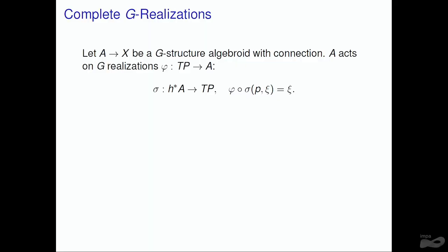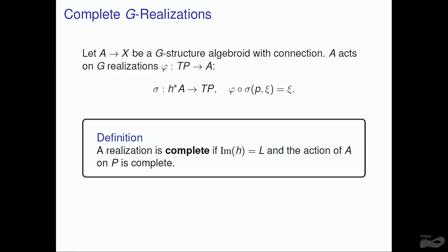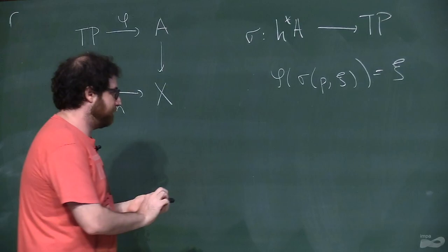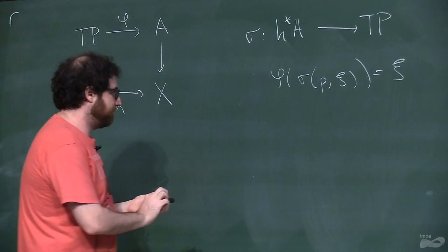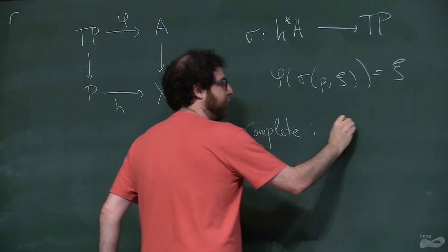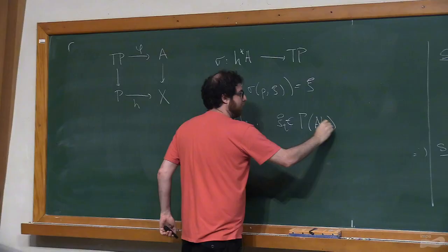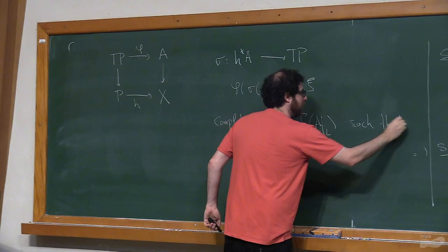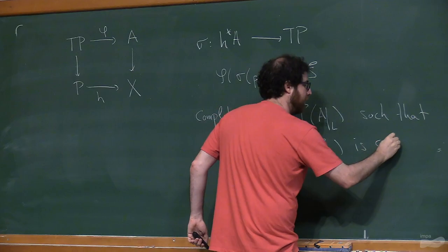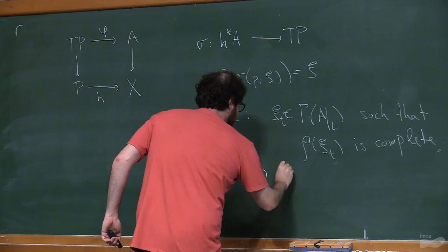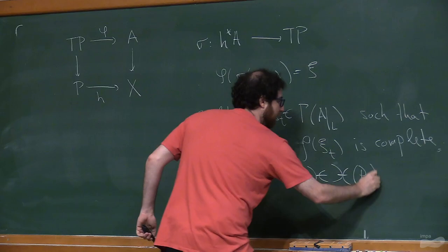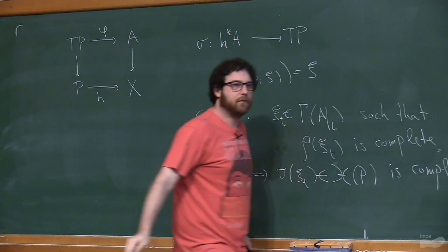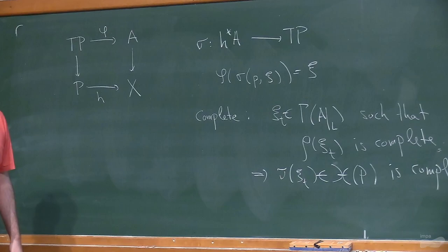We say a G-realization is complete if: first, the image of H is an entire leaf (not just an open set inside the leaf); and second, this action is complete in the sense that if psi_t is a time-dependent section of A|_L such that rho(psi_t) is a complete vector field, then sigma(psi_t), the corresponding time-dependent vector field on P, is also complete.